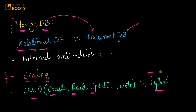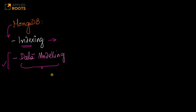In terms of coding, we will be using the Python API, and the basic CRUD operations — create, read, update, delete — in Python for MongoDB are fairly straightforward. The slightly more interesting and in-depth topics from a technical standpoint will be the internal architecture of MongoDB, how to scale MongoDB, and what various indexing and storage options are available, as well as how to model your data.